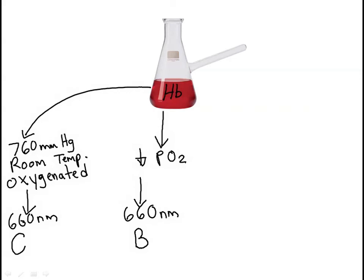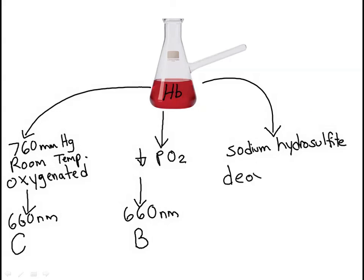It's impossible to completely deoxygenate the hemoglobin sample using the vacuum method. So to completely deoxygenate the hemoglobin, you can add sodium hydrosulphite. Sodium hydrosulphite will deplete the sample of oxygen to a level that's not achievable with the vacuum apparatus in the lab, so this sample is fully deoxygenated. Again, you'll read the absorbance of this sample on the spectrophotometer at 660 nanometers. In the saturation equation, this absorbance value is A — the absorbance of completely deoxygenated hemoglobin.